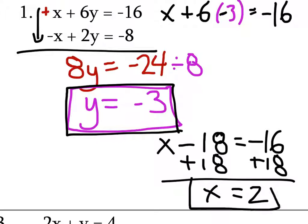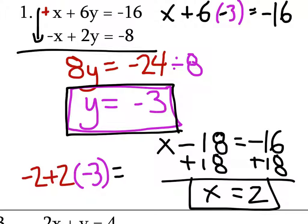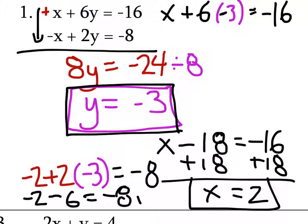You do need to check this. Let's check the other equation. We should have negative 2 plus 2 times Y, which is negative 3, equaling negative 8. Is that true? Yes — here you've got negative 2 minus 6, which is negative 8. Done. We checked it, we're good. Write your answer as a coordinate pair: 2, negative 3.